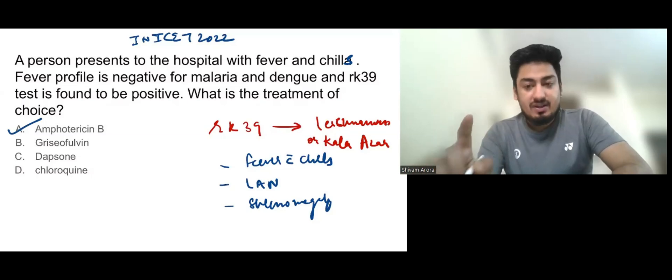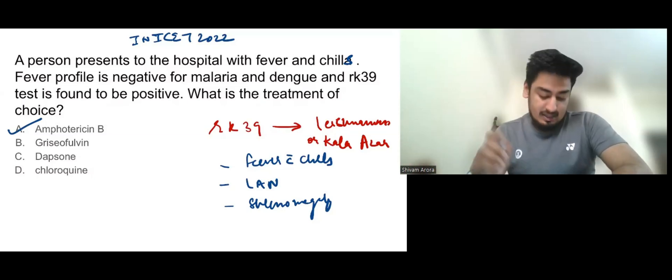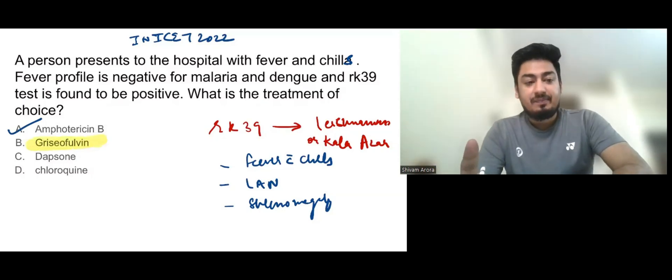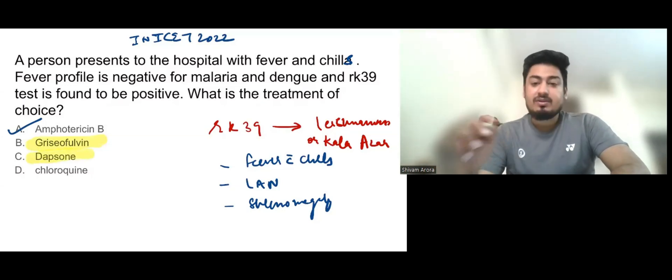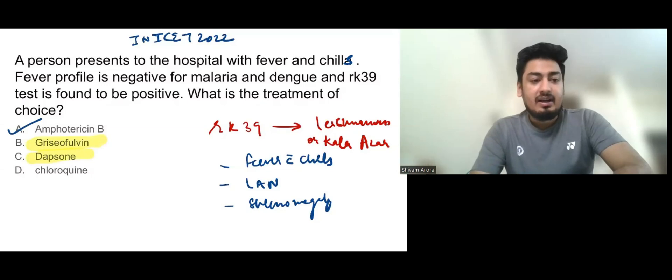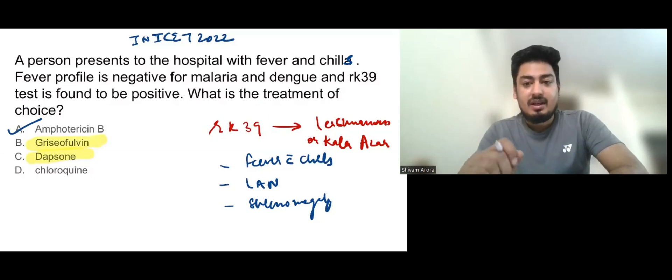Other option is Griseofulvin, which is an antifungal mostly given for tinea infections. Another option is Dapsone, which is an antimicrobial antibiotic given for the treatment of leprosy. You will have to tell me in the comment section what is the mechanism of action of Dapsone. And chloroquine, as we all know, is an anti-malarial agent.